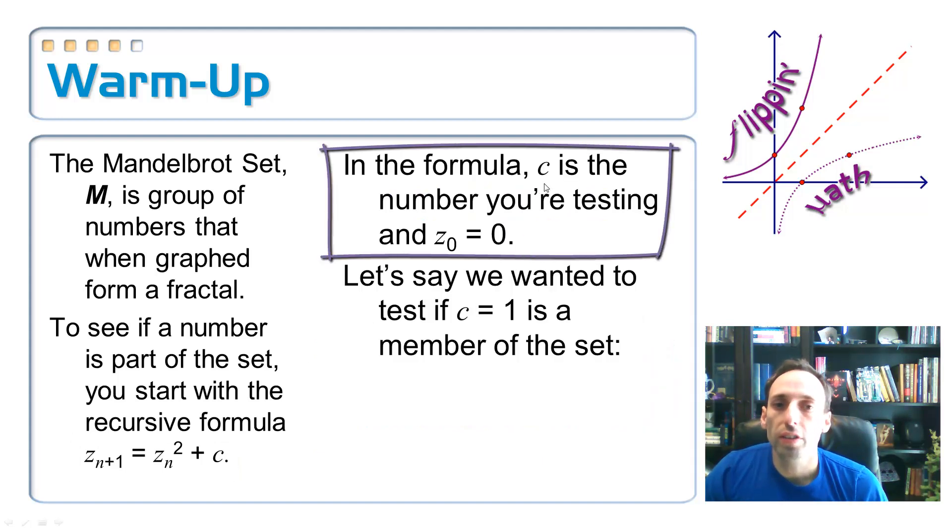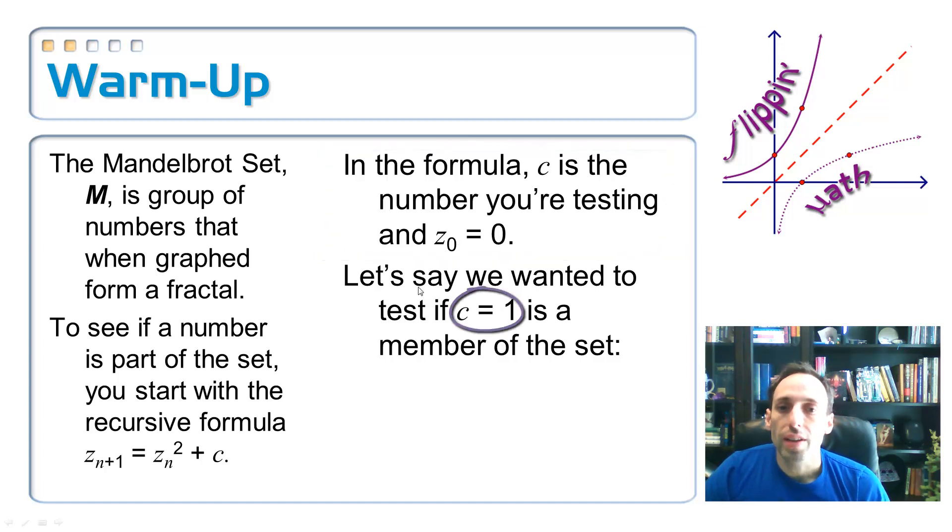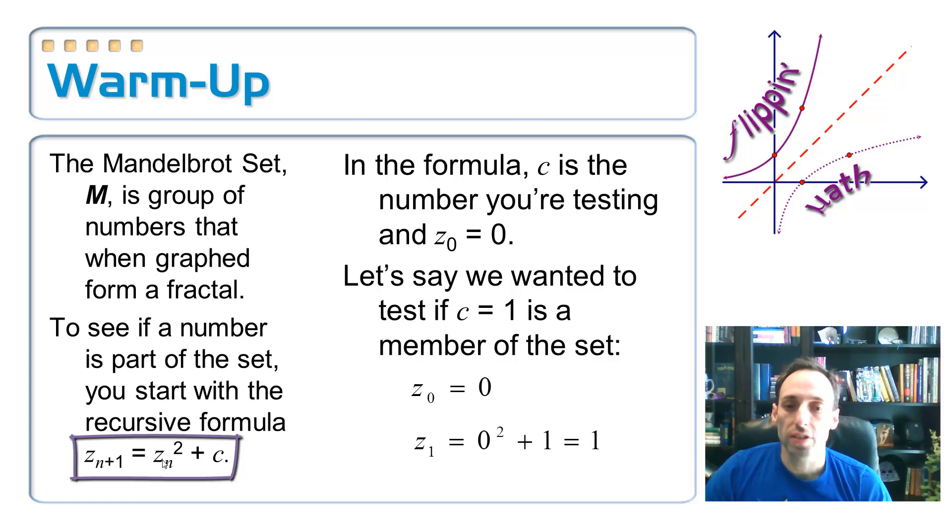So let me explain that a little bit more. So C is the number that you're trying to see if it is in the Mandelbrot set. And C sub zero, we're always going to start with zero. So let's say we're going to test out to see if the number one is a member of the Mandelbrot set. So one is going to be my C value, and I'm going to plug this in right here. And the Z sub nought, I'm going to plug this in as a zero right here.